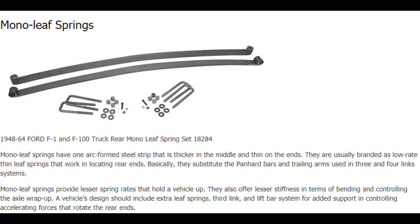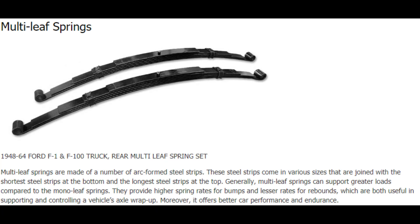There are two types of leaf springs: mono leaf and multi leaf. In mono leaf, only one leaf is present, while in multi leaf there are more than one leaf. Multi leaf has greater carrying capacity when compared with mono leaf.